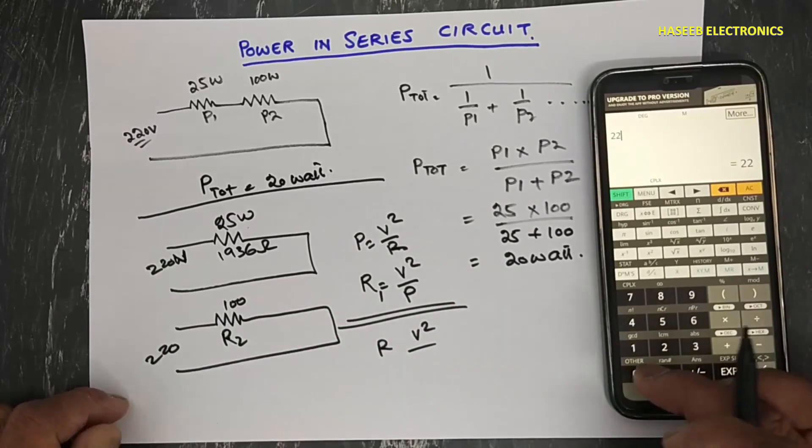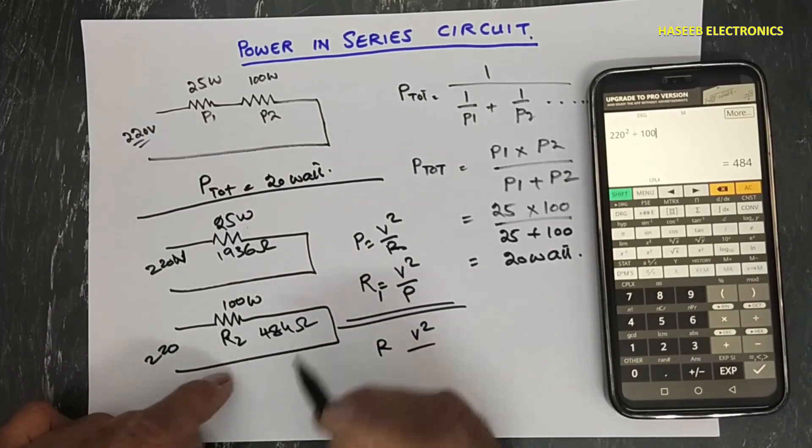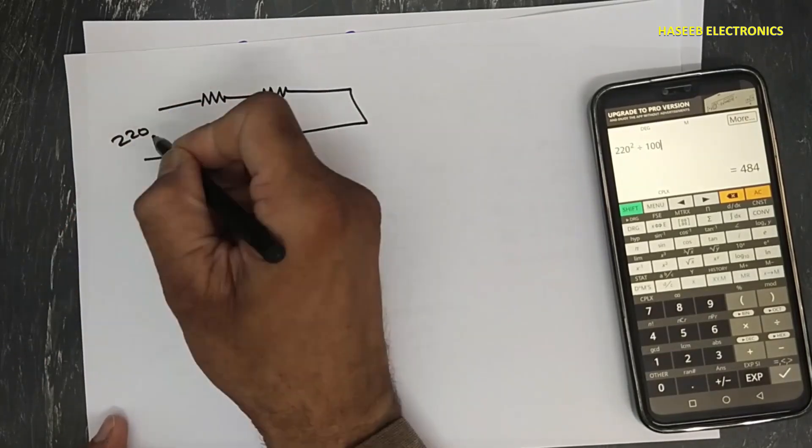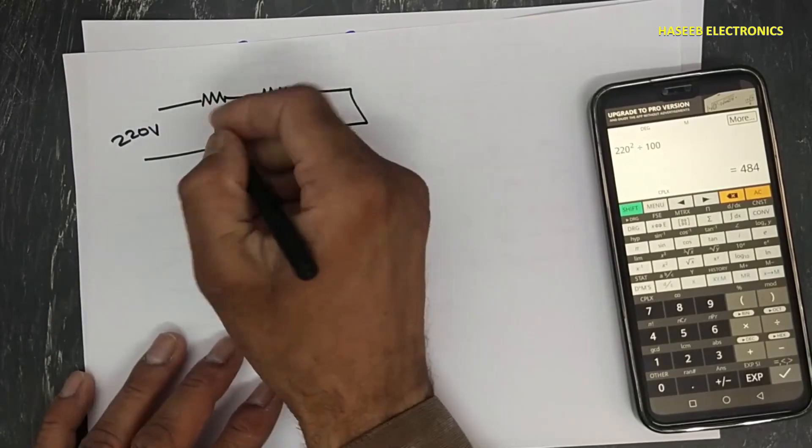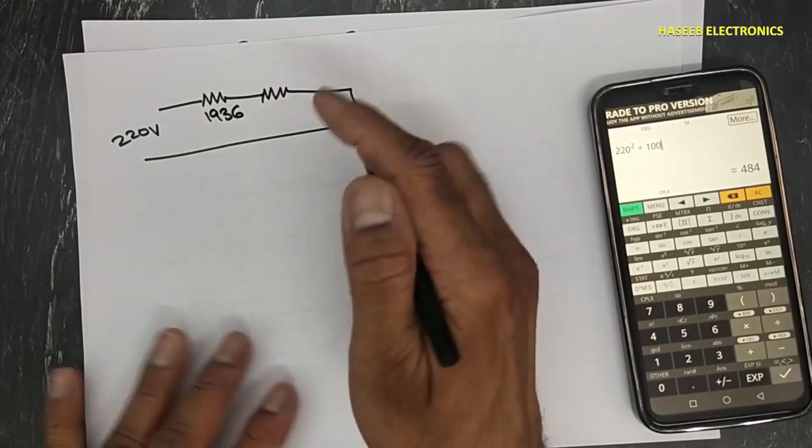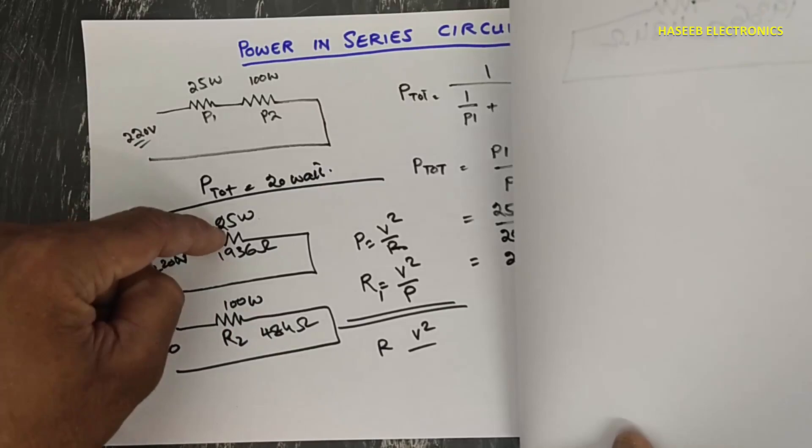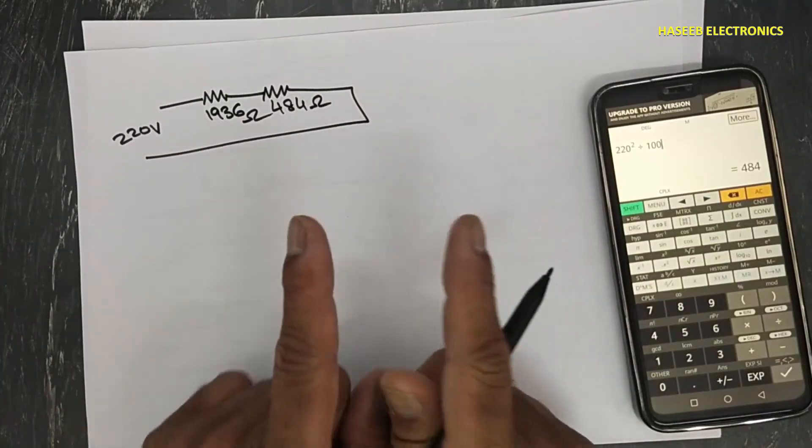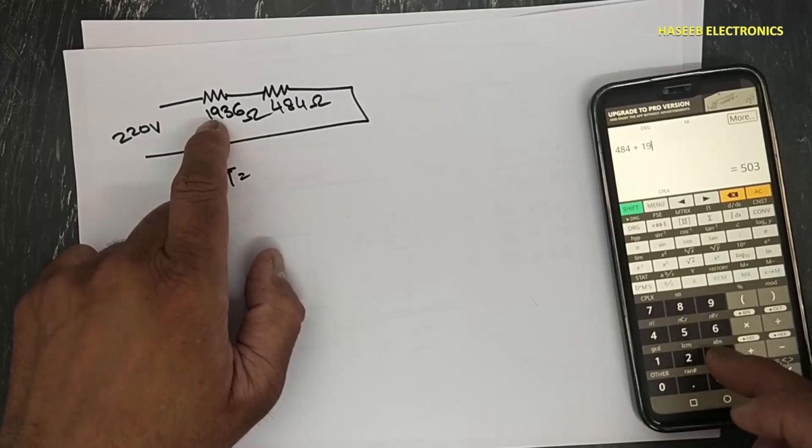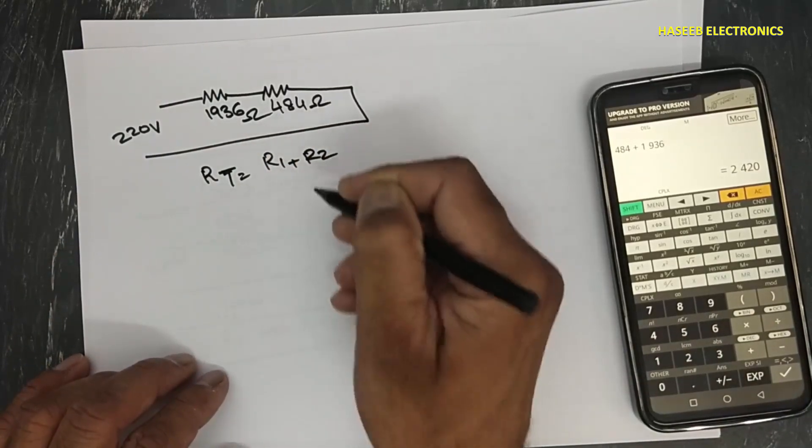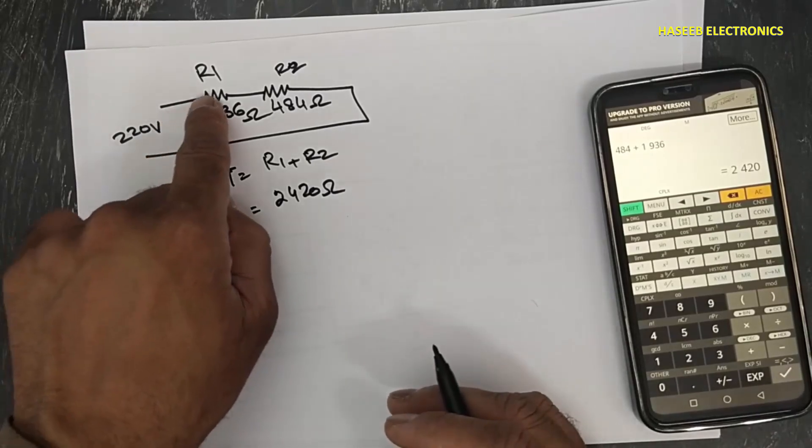Now we can say our circuit is in this condition: 220 volt. Actual power of this load is 25 watt and its resistance is 1936, and this one 484 ohms. When we connect single, it will consume 100 watt and it will consume 25 watt. But when we are connecting in series, that means we are connecting two resistors in series. Current has only one path: 484 plus 1936, R1 plus R2. Here is R2, R1. It is 2420 ohms because resistor in series will be added.